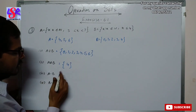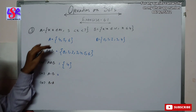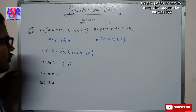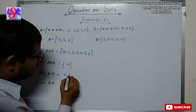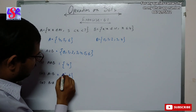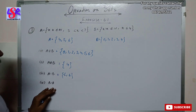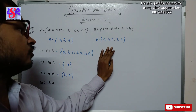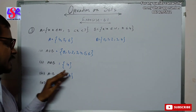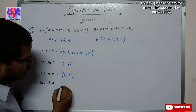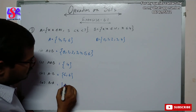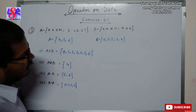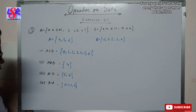For A minus B, we write all elements of A except 4 (which is common to both), so A minus B = {5, 6}. For B minus A, we write all elements of B except 4, so B minus A = {0, 1, 2, 3}.